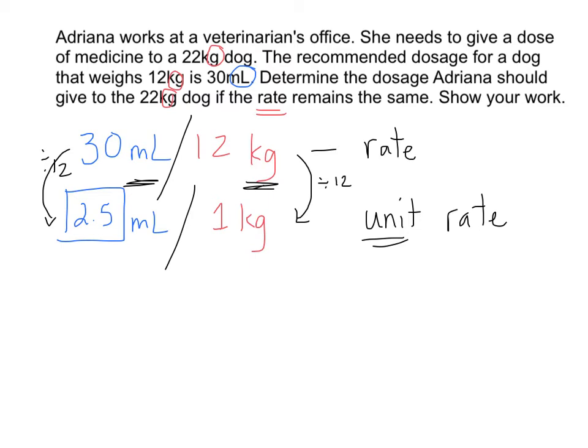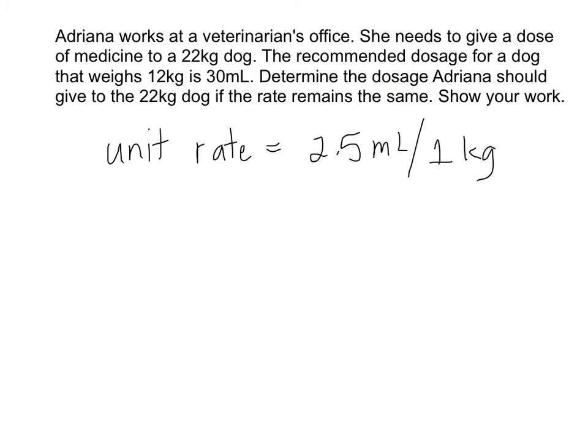So now what can we do with this information? Let's go back to the question. The question said that Adriana needs to give a dose of medicine to a 22kg dog. We need to find the dosage — how many milliliters — Adriana should give to this dog if the rate remains the same. Now that we know the rate, how can we figure out how many milliliters the dog needs if he weighs 22kg? If the unit rate is 2.5ml for every 1kg, can we figure out how many milliliters we need for 22kg?